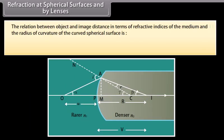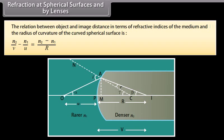The relation between object and image distance in terms of refractive indices of the medium and the radius of curvature of the curved spherical surface is: N2/V − N1/U = (N2 − N1)/R.